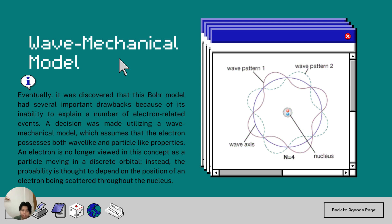According to this theory, an electron is no longer conceived as a particle traveling in a distinct orbital. Rather, it is believed that the probability depends on the location of an electron as it is dispersed throughout the nucleus.